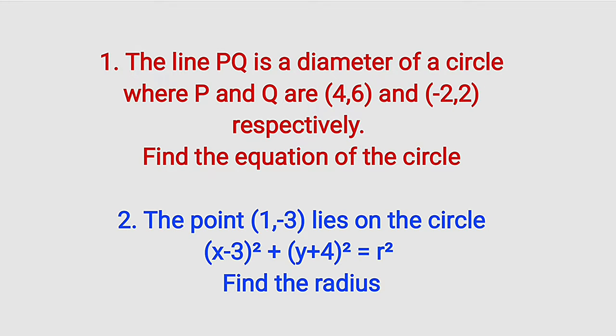The first question reads: the line PQ is the diameter of a circle where the coordinates of P and Q are (4,6) and (-2,2) respectively. We are asked to find the equation of that circle.